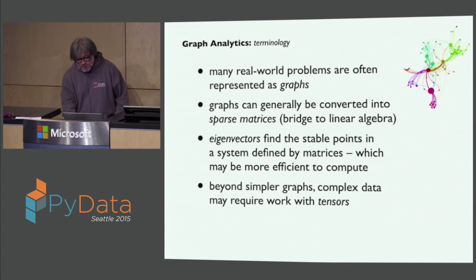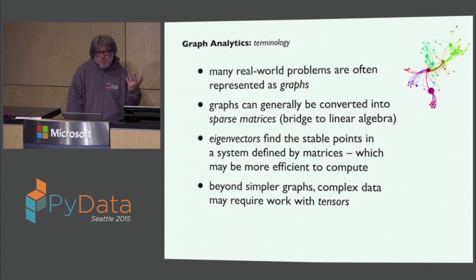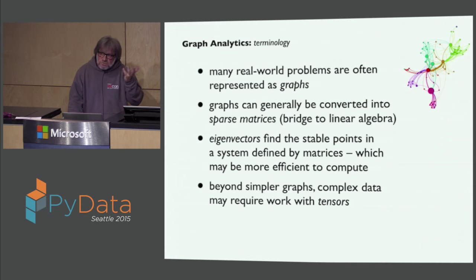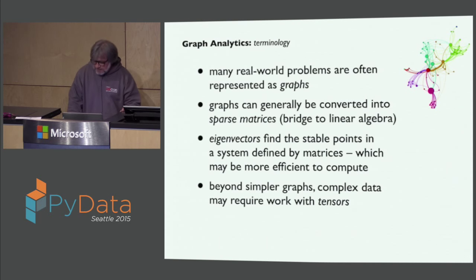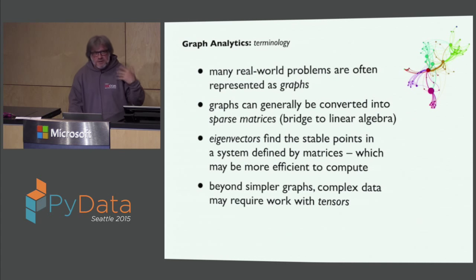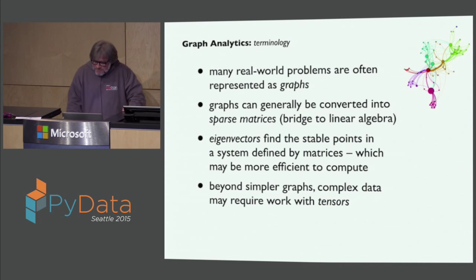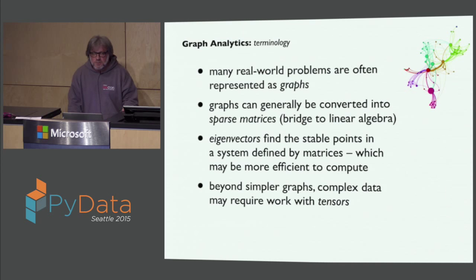Graphs can generally be converted into sparse matrices, and a lot of times it may be more efficient to just convert them and then run parallel algorithms on your matrices. For instance, Facebook uses Apache Giraph and they have trillion element graphs. Twitter came along a little bit later and rather than investing in really large scale graph stuff, they instead invested in algebra and Scalding and ways of doing very efficient parallel processing on matrices.